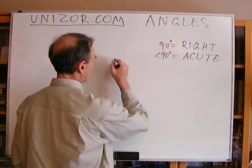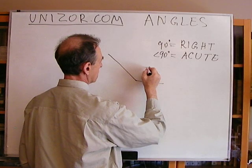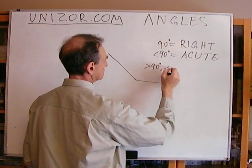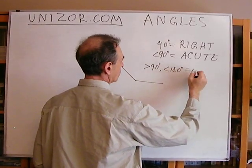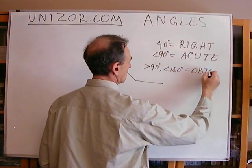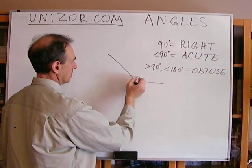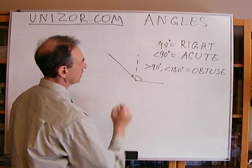And one greater than 90 degrees, but less than 180 degrees. So these angles are called obtuse. So this is obtuse angle. This is 90 degrees. This is greater than 90 degrees.